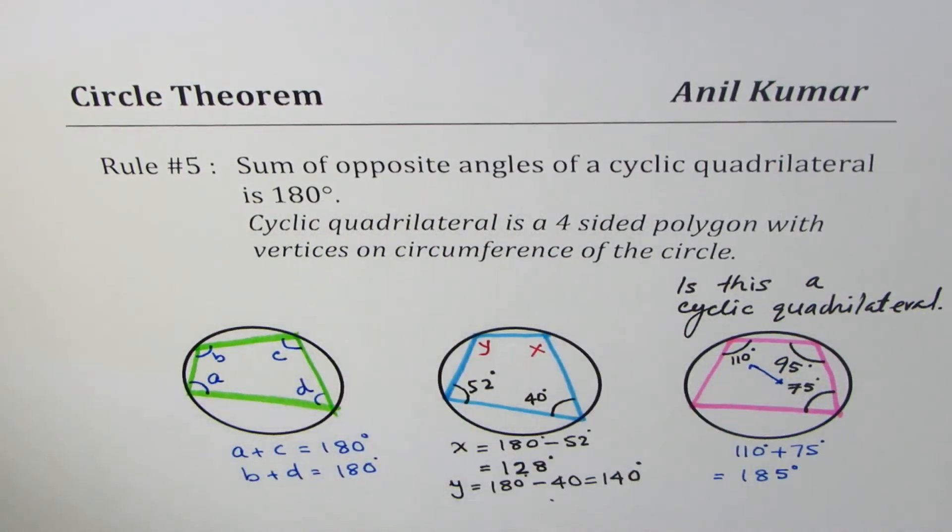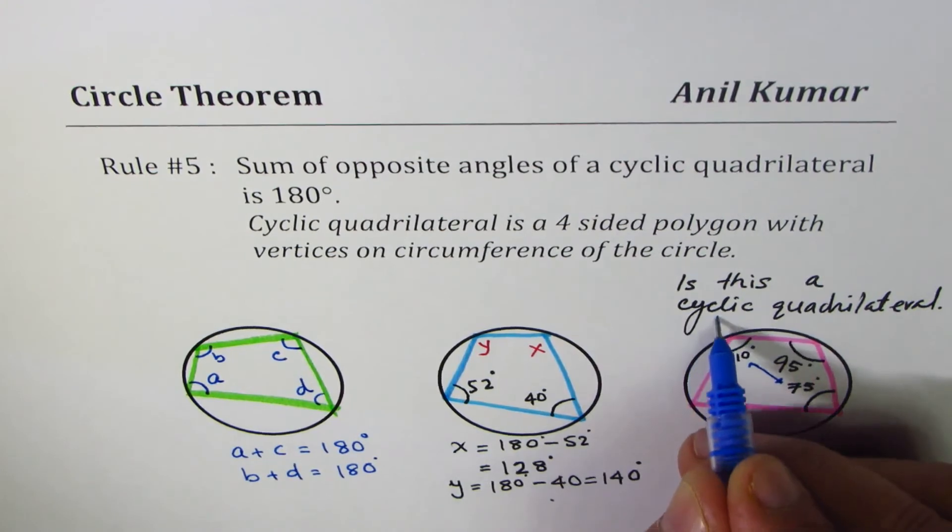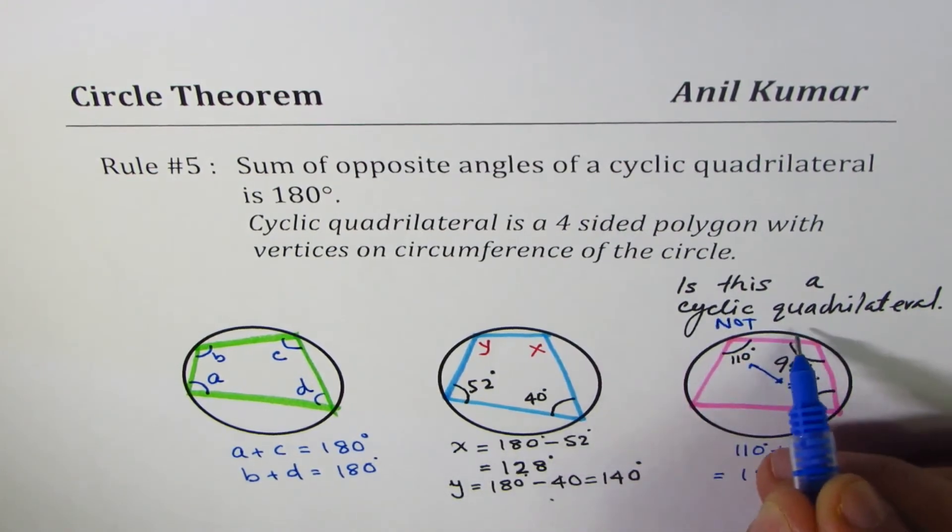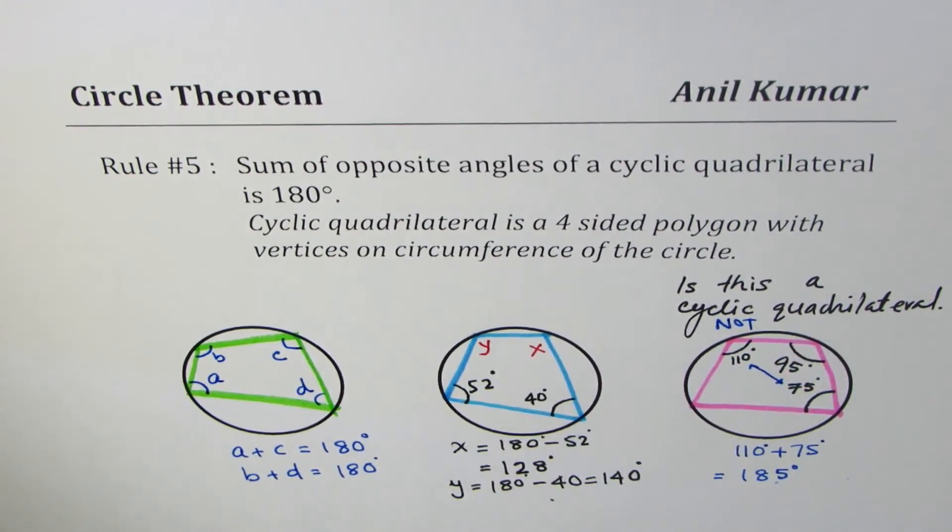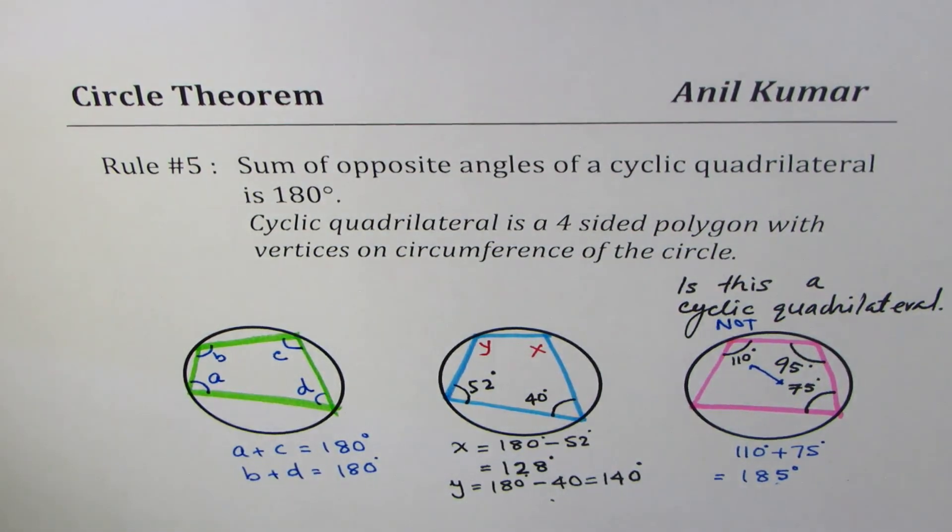And therefore it is not a cyclic quadrilateral. So you could also verify whether the given quadrilateral is a cyclic quadrilateral or not using this rule. It helps both ways to solve questions based on polygons, especially quadrilaterals inscribed within a circle. I hope that helps. Thank you and all the best.